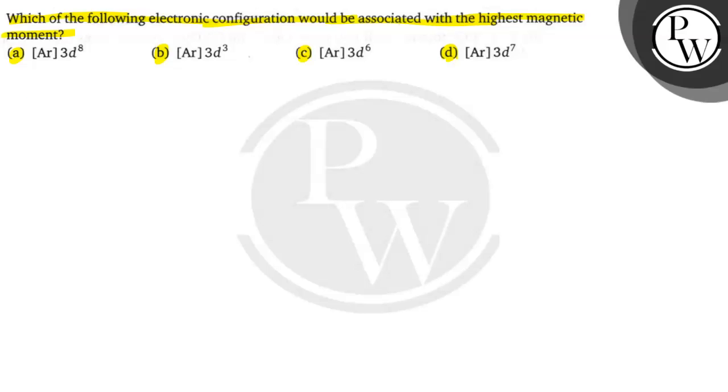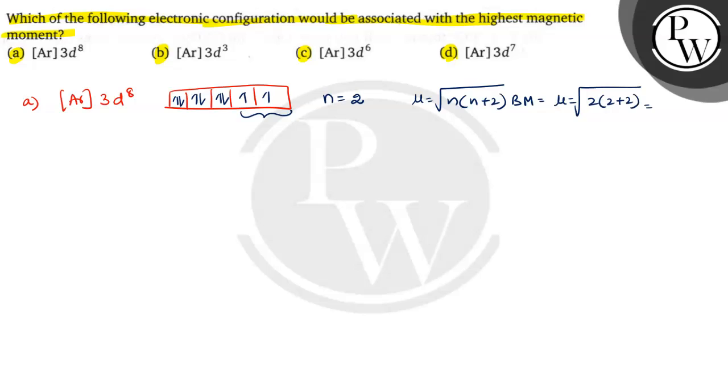In first option, argon 3d8 is given. This option has 8 electrons: 1, 2, 3, 4, 5, 6, 7, 8. These are called unpaired electrons. The number of unpaired electrons are 2. Magnetic moment mu is equal to square root of n into n plus 2, Bohr magnetons. If you substitute mu is equal to root of 2 into 2 plus 2, that is 2.8 Bohr magnetons.